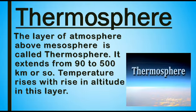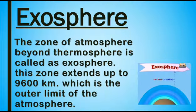The thermosphere is present above the mesosphere. It extends from 90 to 500 km or so. Temperature rises with rise in altitude in this layer. The zone of atmosphere beyond thermosphere is known as exosphere. This zone extends up to 9600 km, which is the outer limit of the atmosphere.